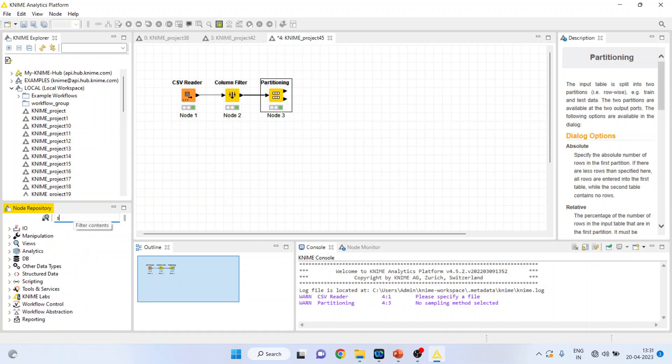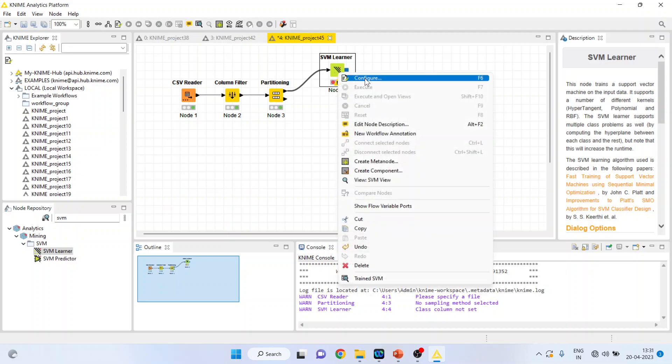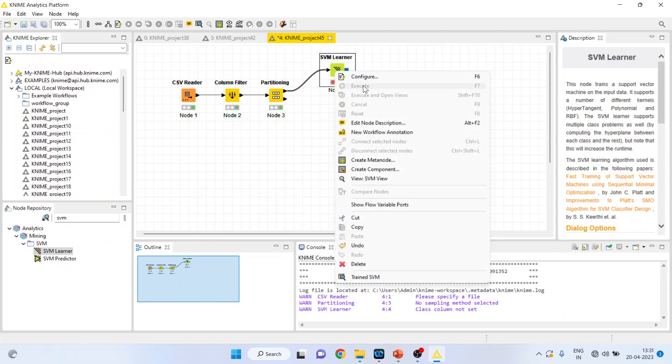Now activate the SVM learner from here. Right-click on it, configure. Make sure heart disease is on. Don't change the default settings unless and until it is required. These are the kernel settings required for when you want to solve complex problems or which require a higher dimension to solve it.